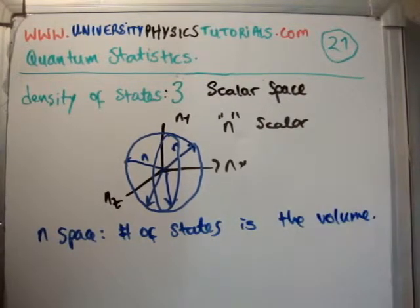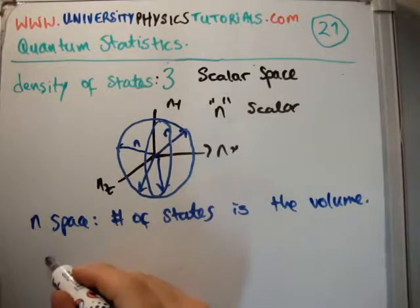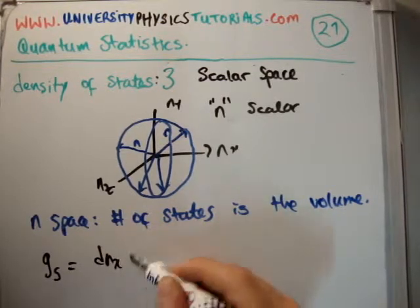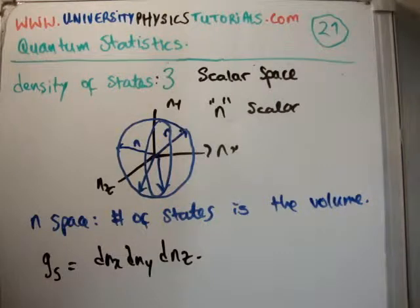And I've explained that, because each state actually only contributes one eighth, let's say. I've discussed that. I hope you can believe that. So going back to our general formula, we said that g sub s is equal to dn sub x, dn sub y, dn sub z. This is the volume in vector n space.